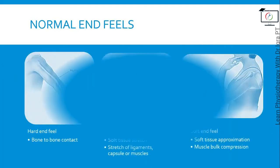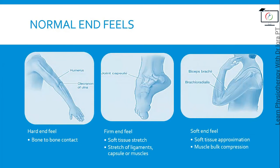Hard end feel, also known as bony end feel — as the name indicates, it is a hard and abrupt stop at the end of range of motion and is due to bone-to-bone contact. For example, during elbow extension the olecranon process fits into the olecranon fossa of the humerus to limit elbow extension.